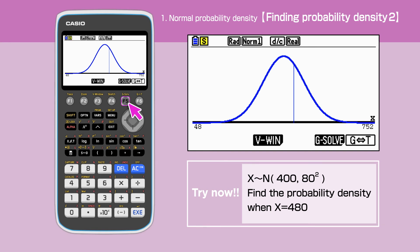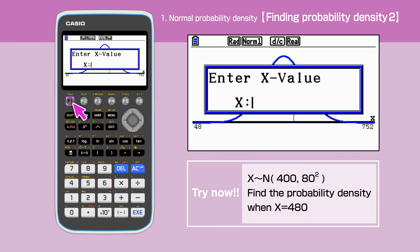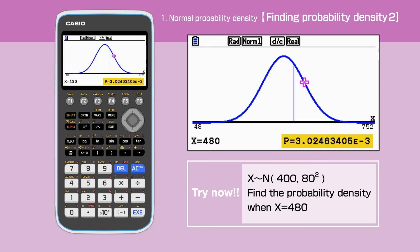Press Shift, F5, then F1. Enter 480 for x. The answer is 3.02 times 10 to the minus 3.